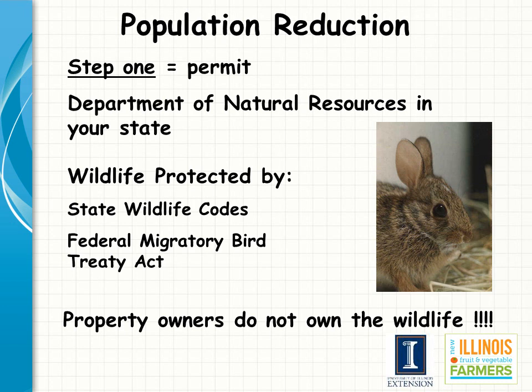Wildlife are protected by state and federal laws. Therefore, the first step in using population reduction is to obtain a wildlife nuisance permit. These permits are available through your local wildlife biologist with the Illinois Department of Natural Resources. Use the University of Illinois Extension's Living with Wildlife in Illinois website to find the biologist responsible for your county. These permits are free of charge and must be obtained even if you want to live trap an animal and move it off your farm unharmed. Many people think that because the animal is causing damage on private property they don't need a permit, but this is not the case.